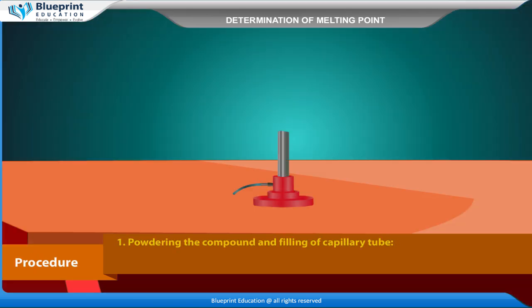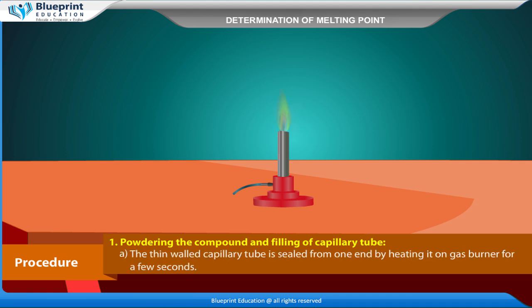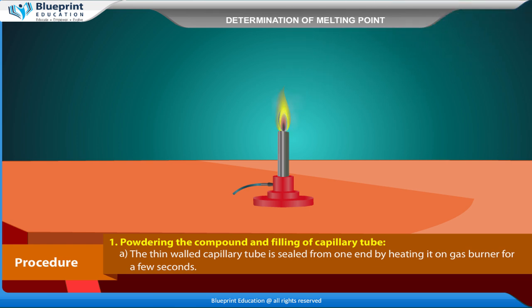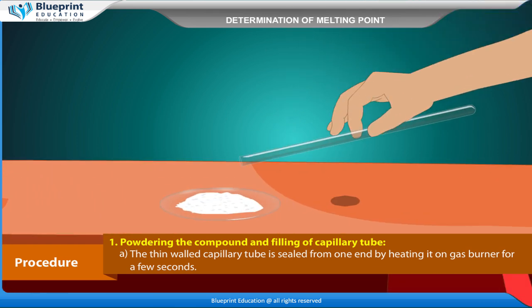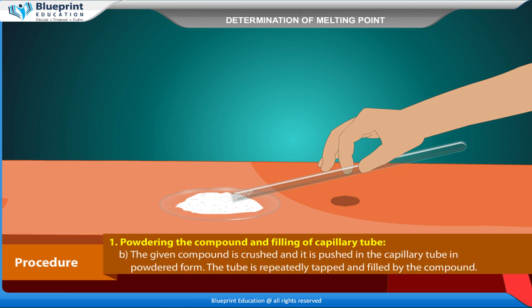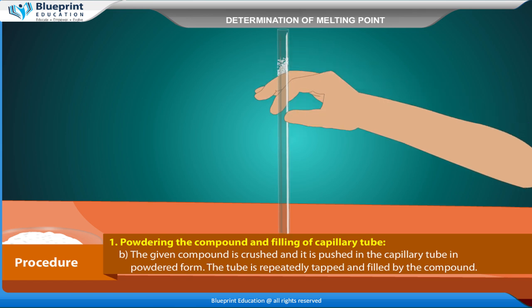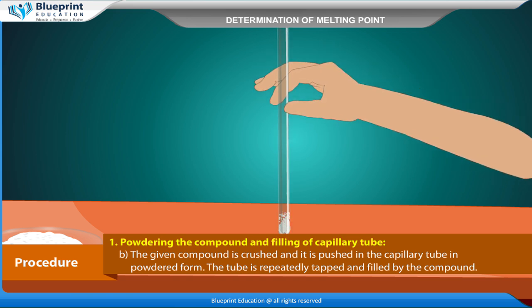Procedure — Powdering the compound and filling of capillary tube. A. The thin-walled capillary tube is sealed from one end by heating it on a gas burner for a few seconds. B. The given compound is crushed and pushed into the capillary tube in powdered form. The tube is repeatedly tapped and filled with the compound.